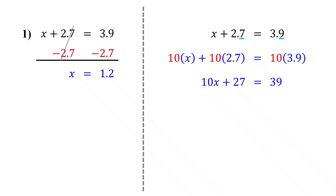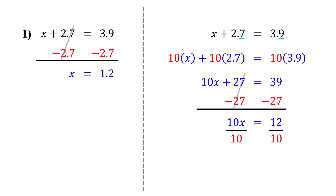First, isolate the variable term by subtracting 27 from both sides. On the left, the 27s cancel, leaving 10x. On the right, we get 12. Next, isolate x by dividing both sides by 10 — the 10s cancel, leaving x. Dividing by 10 just moves the decimal point one place to the left. This method takes a few more steps, but it makes the math easier. You'll love it when we get to complicated equations later.